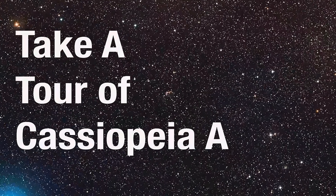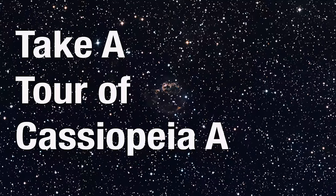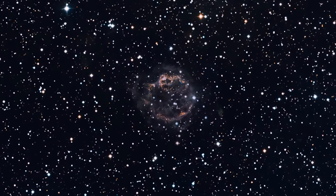Cassiopeia A, or Cass A, is a supernova remnant located 11,000 light-years away in the constellation Cassiopeia.